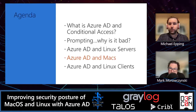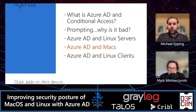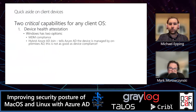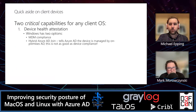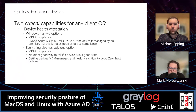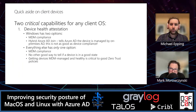Now let's talk about the client aspect — what we can do for Macs. There are two critical capabilities we want from any client OS. First is device health attestation — on Windows you have MDM compliance or hybrid Azure AD join. On everything else, MDM compliance is the only option. Azure AD needs MDM compliance to know the health of the device, and this is increasingly critical as customers adopt zero-trust policies requiring both MFA and device compliance.